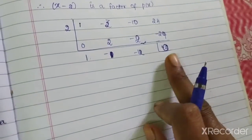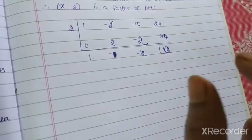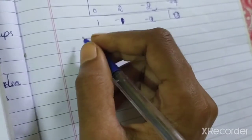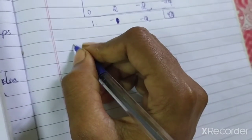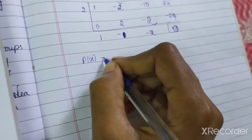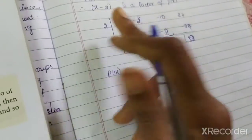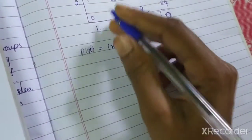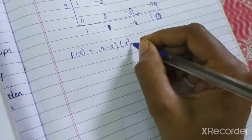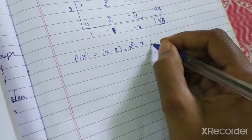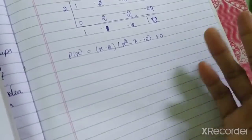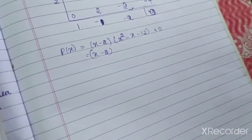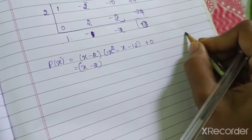In synthetic division, your remainder should be 0 to find out your factors — whose remainder should be 0. So, P of x can be written as x minus 2 into x squared minus x minus 12 plus 0. So I don't need to write the remainder. I can factorize this: x minus 2.